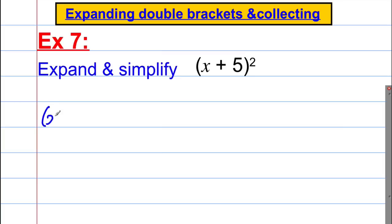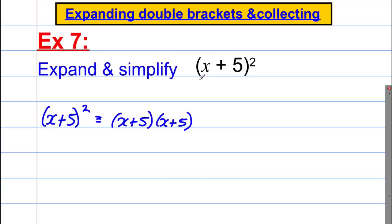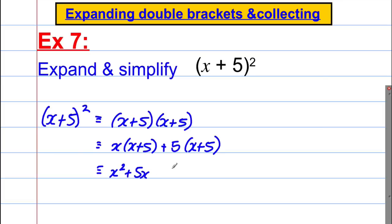Now (x plus 5) all squared. Remember this means (x add 5) multiplied by (x add 5). So write it as x multiplied by (x add 5), plus 5 multiplied by (x add 5). Expanding: x squared, add 5x, add 5x, add 25. Combining like terms: x squared add 10x add 25.